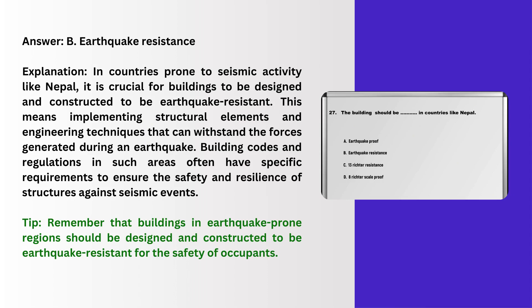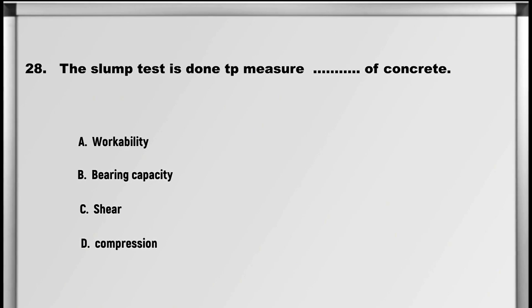Explanation: In countries prone to seismic activity like Nepal, it is crucial for buildings to be designed and constructed to be earthquake resistant. This means implementing structural elements and engineering techniques that can withstand the forces generated during an earthquake. Building codes and regulations in such areas often have specific requirements to ensure the safety and resilience of structures against seismic events. Tip: buildings in earthquake prone regions should be designed and constructed to be earthquake resistant for the safety of occupants.